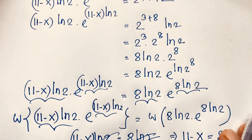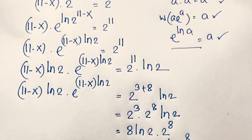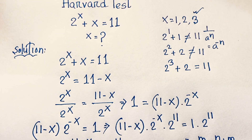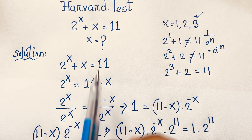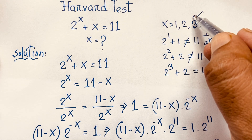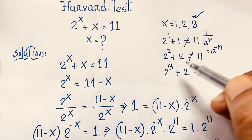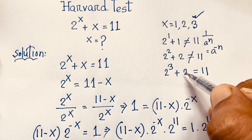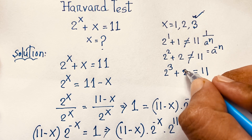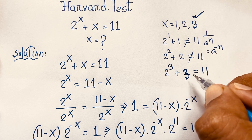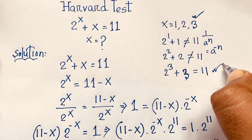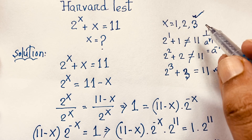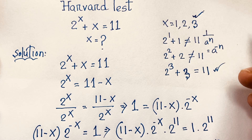Let's verify our answer. Our question is 2 to the power of x plus x equals 11. We found x is equal to 3. So 2 to the power of 3 plus 3 equals 8 plus 3, which is 11. Our final answer is confirmed: x is equal to 3.